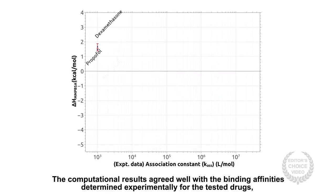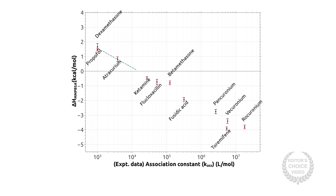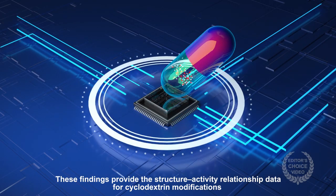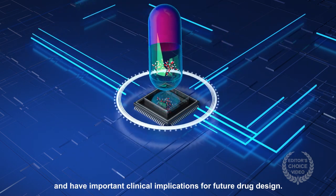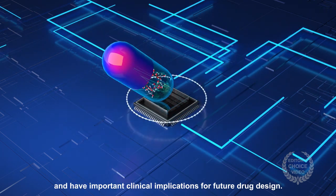The computational results agreed well with the binding affinities determined experimentally for the tested drugs, validating the simulations. These findings provide the structure-activity relationship data for cyclodextrin modifications and have important clinical implications for future drug design.